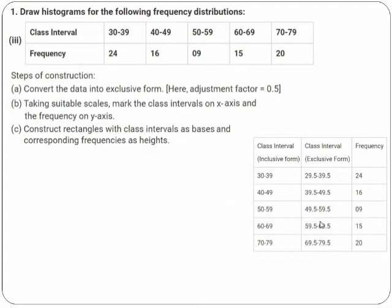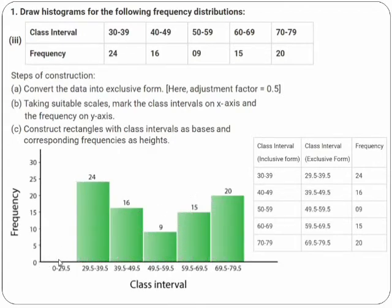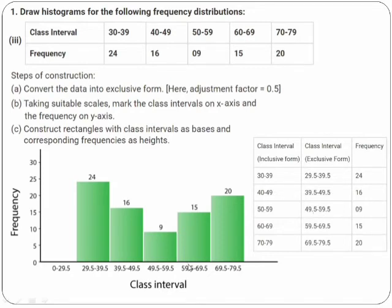When you draw the diagram, note that unlike the earlier question which started from 0, here we don't have 0. So you need to leave a gap or draw break lines on the x-axis. From 0 to 29.5 there is nothing, so that area is blank. From 29.5 to 39.5, the frequency is 24; from 39.5 to 49.5, it is 16; from 49.5 to 59.5, it is 9; and so on. Pause the video and note down the solution.